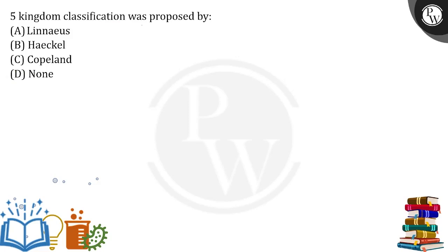Five kingdom classification was proposed by — but before arriving at this five kingdom classification, there were a lot of scientists doing their discoveries on how to classify organisms. How can we reach an arrangement where we can classify all the organisms into several groups, and how many groups are enough?